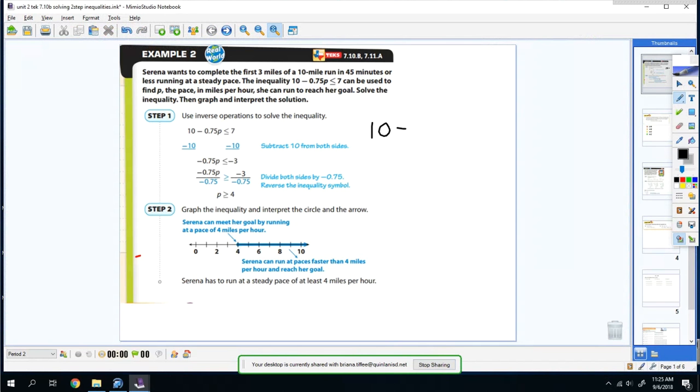So we have 10 minus 0.75p is less than or equal to 7. So I still draw my line, but this time I draw my line down the inequality sign. So look at the left side. I get rid of the 10. That's a positive 10. I'm going to ignore the subtraction sign. It's a positive 10, so I subtract 10 from both sides. So now, since I cancel this out, that subtraction now becomes a negative.